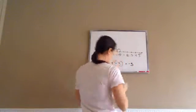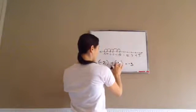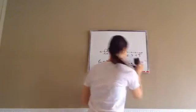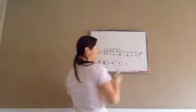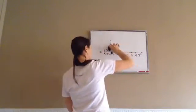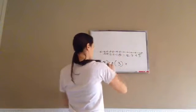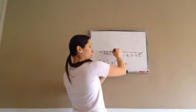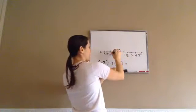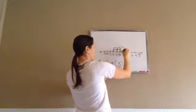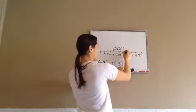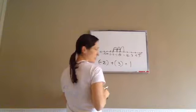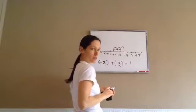What if we had a negative 2 and a positive 3? What would our answer be? Let's do it. Negative 2: 1, 2. But then we're going to go positive 3: 1, 2, 3. And what do we get? A positive 1 answer. See that?